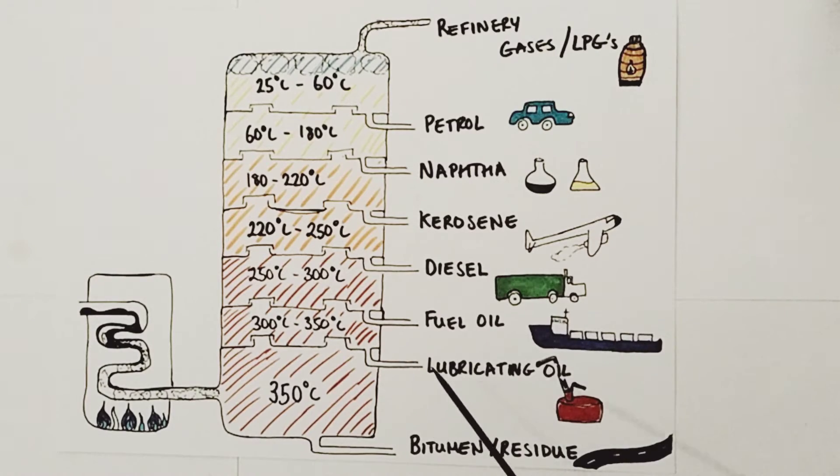Next we have lubricating oil, which is a thick viscous oil used to lubricate and allow easy frictionless use. This is followed by fuel oil, a high energy fuel source used for transportation of goods across oceans and seas. We're talking about large transport shipping.